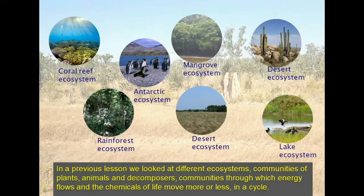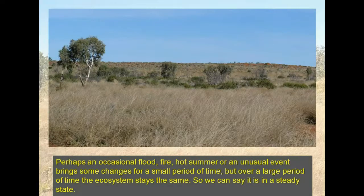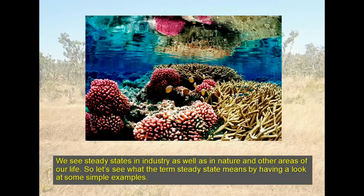In a previous lesson we looked at different ecosystems — communities of plants, animals, and decomposers through which energy flows and the chemicals of life move more or less in a circle. Some of these ecosystems that have stayed much the same for hundreds or perhaps thousands of years can be described as steady state systems. We see steady states in industry as well as in nature and in other areas of our life.